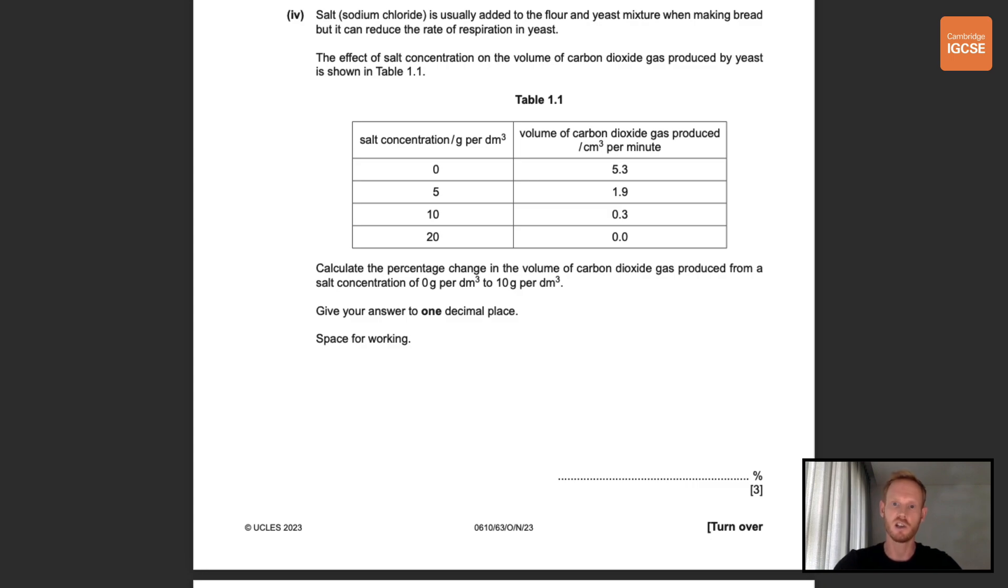You need to calculate the percentage change in the volume of carbon dioxide gas produced from a salt concentration of 0 grams per cubic decimeter to 10 grams per cubic decimeter. Give your answer to one decimal place and show your working. We have 5.3 cubic centimeters of carbon dioxide produced per minute at 0 grams of salt and 0.3 cubic centimeters at 10 grams of salt. So first work out the change in gas produced, the second value minus the first, 0.5 minus 5.3, that's minus 5 cubic centimeters per minute, and then divide by the initial value and multiply by 100 to work out a percentage. The answer is minus 94.3396, minus 94.3 when rounded to one decimal place.